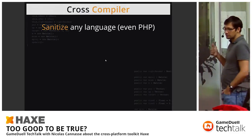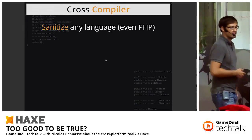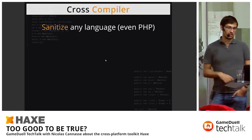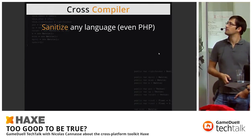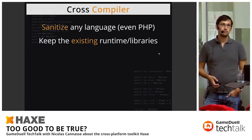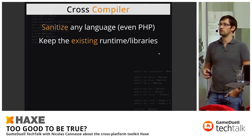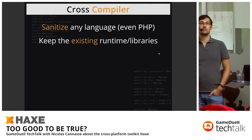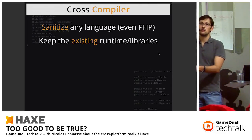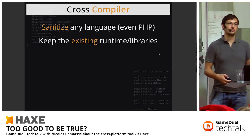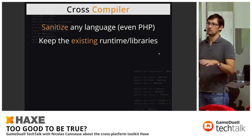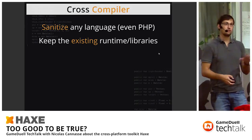The good points about Haxe are that it sanitizes any language — it brings a powerful type system and corrects issues the target language might have. It allows you to keep the existing runtime and access native platform libraries. The only drawback is that if you access a native library for one platform and later want to run on another, you'll need that library to be available there or write a replacement.